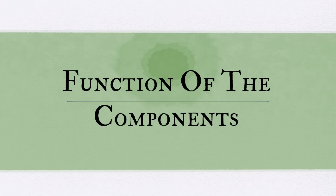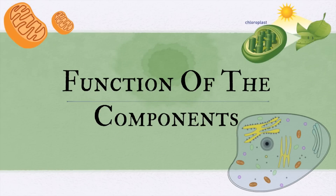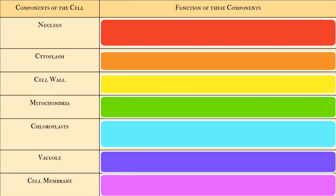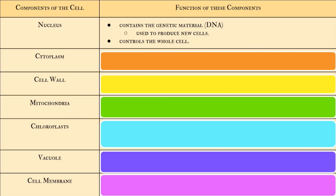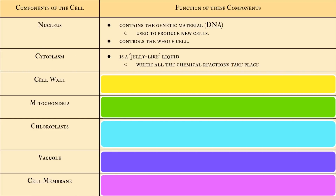Each part of the cell plays an important role. Now we are going to learn about the function of the components. The first component is the nucleus — the nucleus contains the genetic material, also known as DNA. This genetic material is used to produce new cells, and the nucleus also controls the whole cell. Next, the cytoplasm is a jelly-like liquid where all the chemical reactions take place.